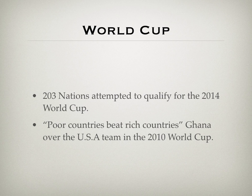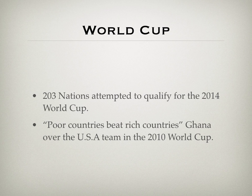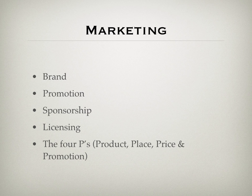The World Cup has 203 nations attempting to qualify for the 2014 World Cup. A great quote about the World Cup is that poor countries beat rich countries — as Ghana did over the United States team in the 2010 World Cup. We think we have the best people in the world ready to play, and then we face a country with economic challenges and lose to them. How do FIFA and the NBA do it? It's the basics — brand, promotion, sponsorship, licenses, and the four Ps: product, place, price, and promotion. This is how they drive global recognition.